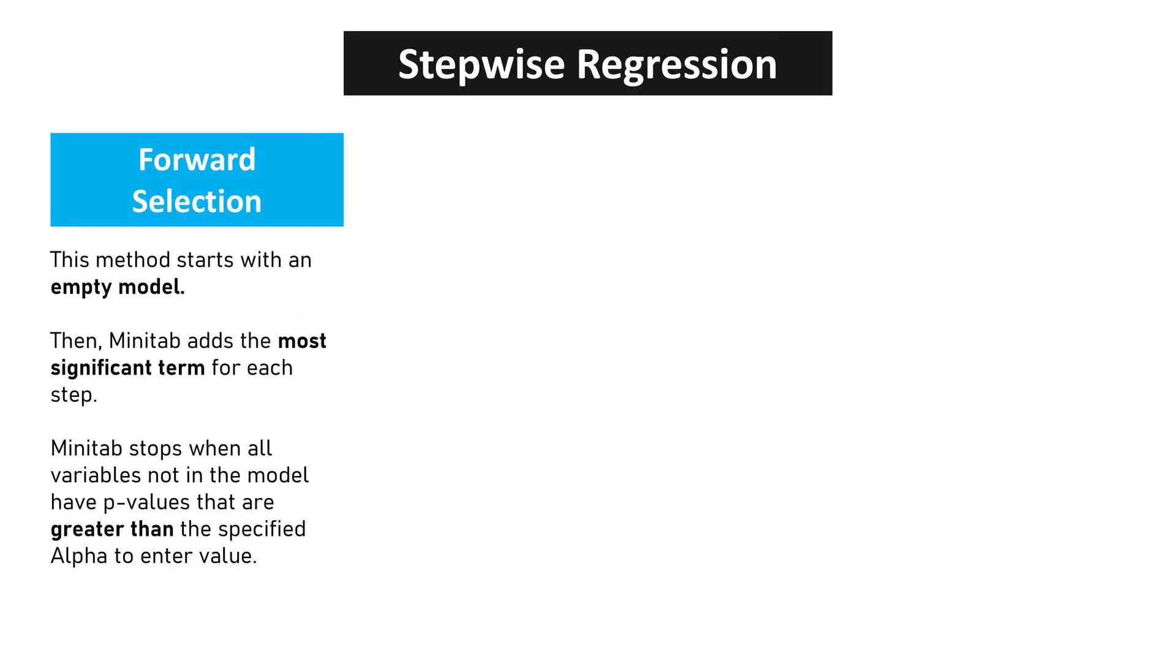Forward Selection starts with an empty model. Then Minitab adds the most significant term for each step. Minitab stops when all variables not in the model have p-values that are greater than the specified alpha to enter value.